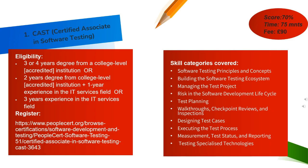The CAST exam covers these skill categories: Software testing principles and concepts; Building the software testing ecosystem; Managing the test project; Risk in the software development lifecycle; Test planning; Walkthroughs; Checkpoint reviews and inspections; Designing test cases; Executing the test process; Measurement of test status; and Reporting and testing specialized technologies. These are the 10 skill categories for this exam.